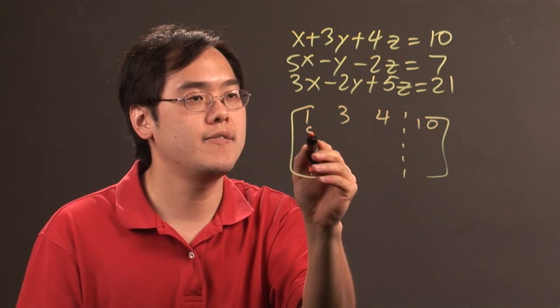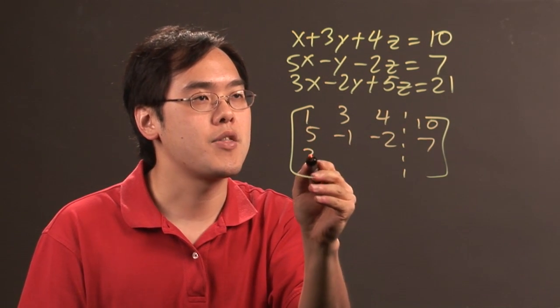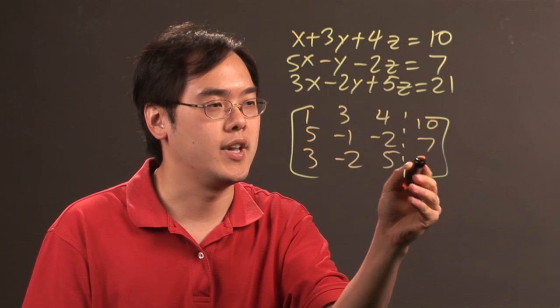So 1, 3, 4, 10, 5, negative 1, negative 2, 7, 3, negative 2, 5, and 21.